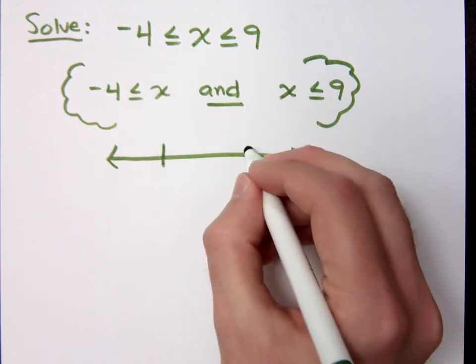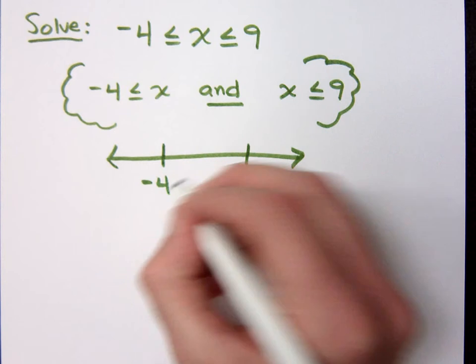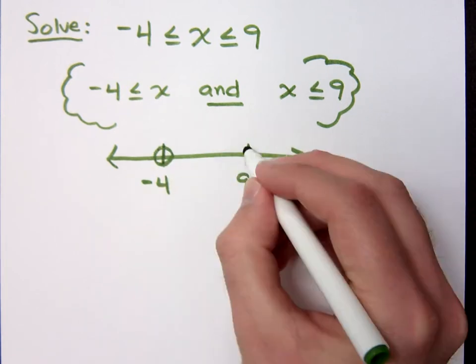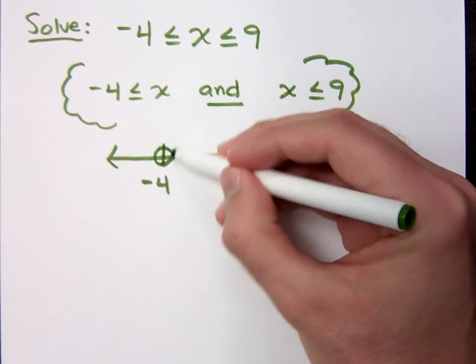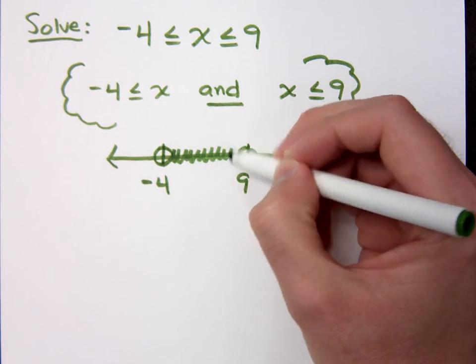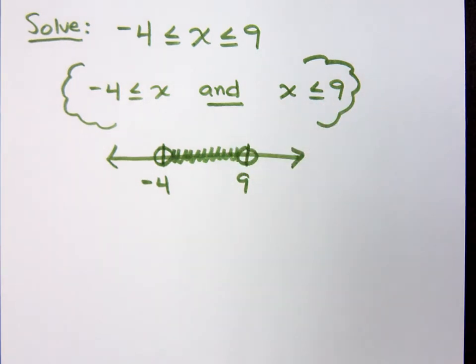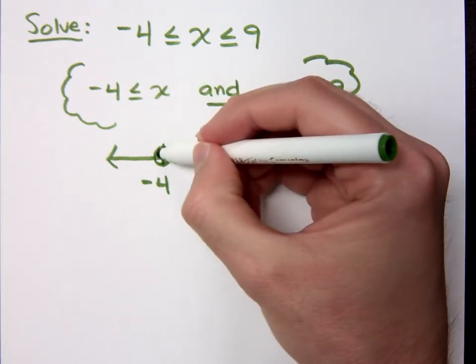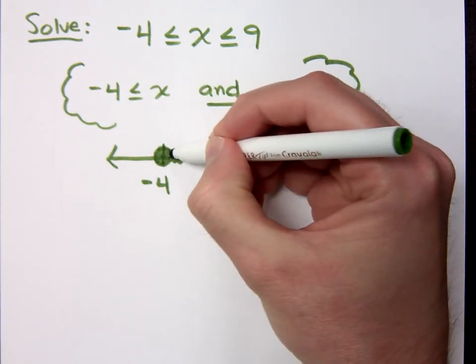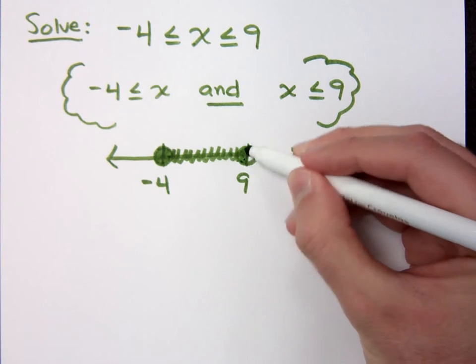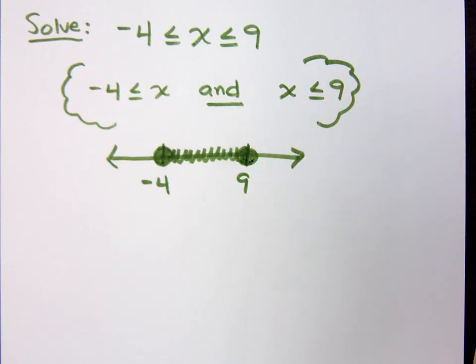That means your solutions are between negative 4 and 9, so everything that's in between here will be a solution. Why would they be filled in circles? I'm giving you the option of being equal to, right? So it means I can be equal to negative 4 and I can be equal to 9.